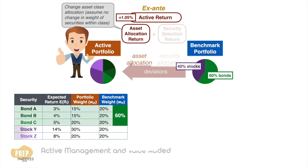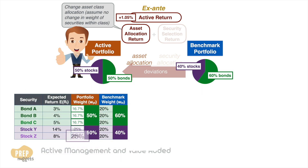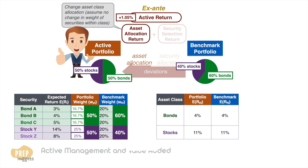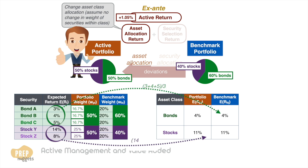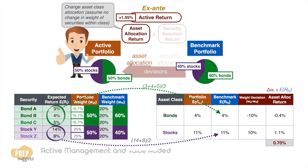For our example, the active manager only deviates from the original 60% bonds / 40% stocks to 50/50 for the portfolio, but keeps the security allocation equally weighted within each asset class as in the benchmark. Based on the expected returns of the individual securities, the expected return of bonds as an asset class for the benchmark is 4%, and 11% for stocks. Like how we calculate active return, we determine the deviations in asset allocation weights and calculate the change in portfolio return based on their expected returns. Summing them up, we get the asset allocation return, which in this case is 0.7%.